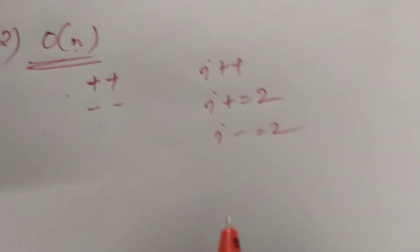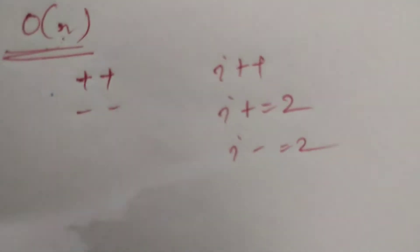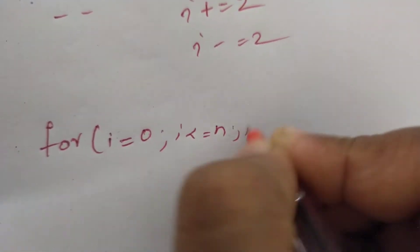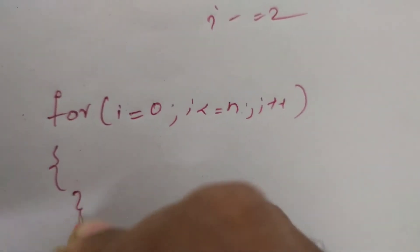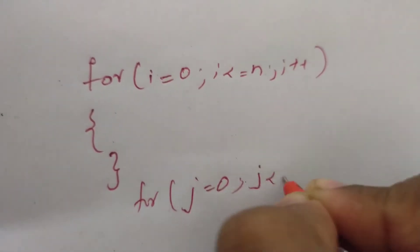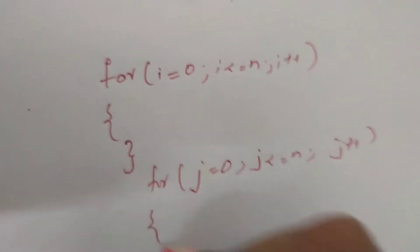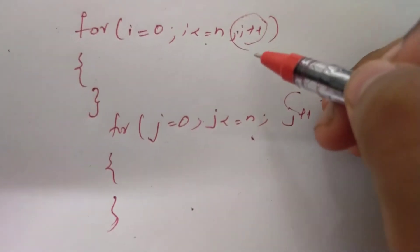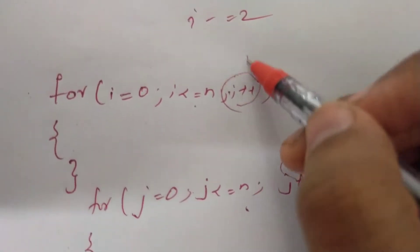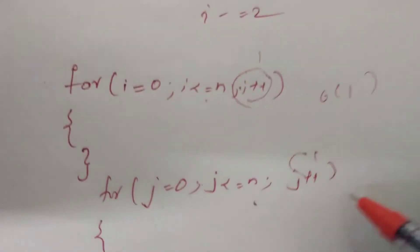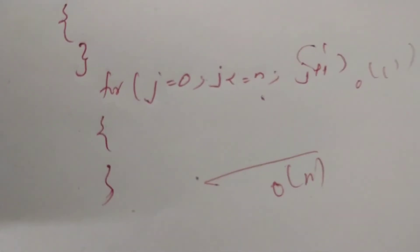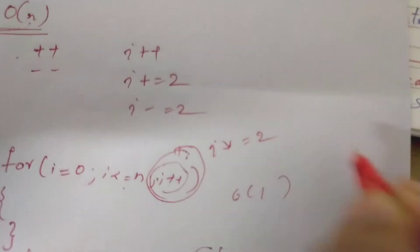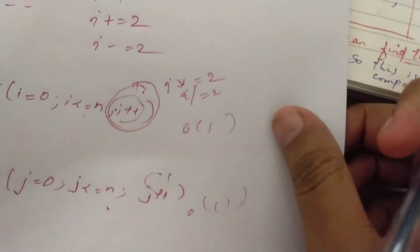Now we will see order of n complexity. If we have two consecutive loops — one is order of 1 and the other is order of 1 — we have to add them. In this case we have to add the complexities together.